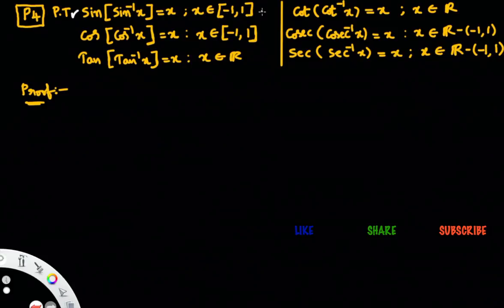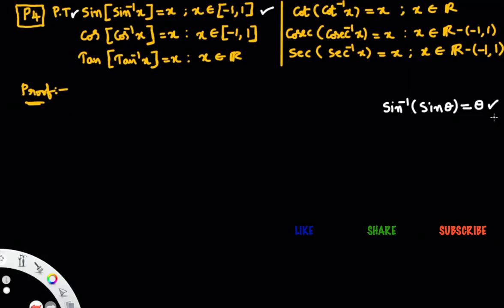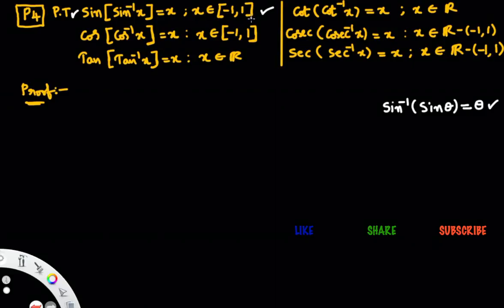This holds when x belongs to the closed interval minus 1 to 1. In the third property, we learned that sine inverse of sine theta equals theta. The fourth property is different from the third property. Observe: sine of sine inverse x is the fourth property, while sine inverse of sine theta is the third. Also, cos of cos inverse x equals x, tan of tan inverse x equals x — similarly for the remaining three.